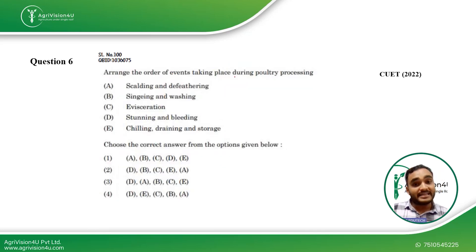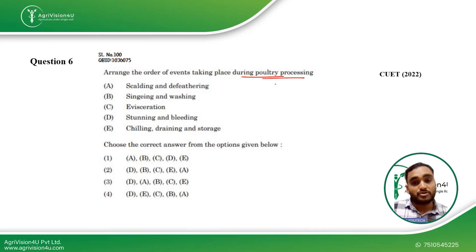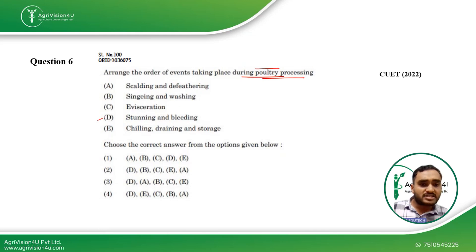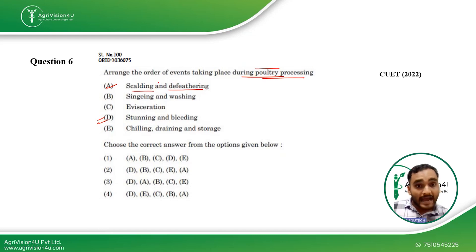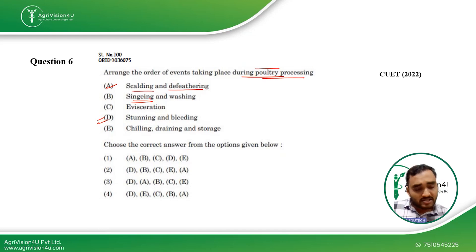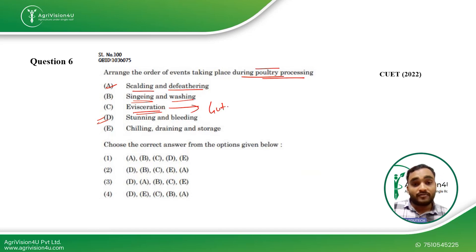Next question: arrange the order of events taking place during poultry processing — a topic from meat products technology. Poultry refers to birds used for meat purposes. The first step in any meat processing is slaughtering. Then we go for scalding and de-feathering — scalding is done to ease the de-feathering process by dipping the dead animal in hot water. Then singeing, where a blowtorch is used to remove small hairs and feathers remaining on the animal body. Then washing, followed by evisceration — the removal of the gut or viscera.